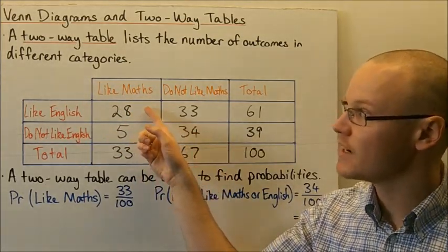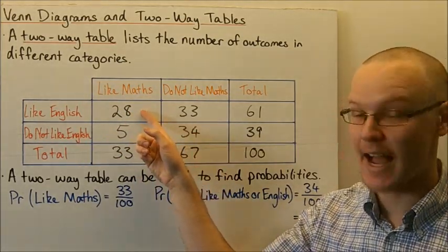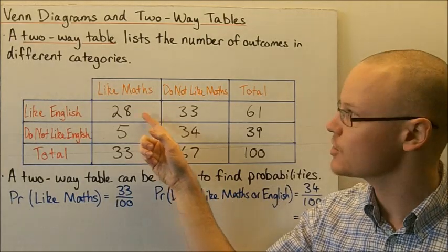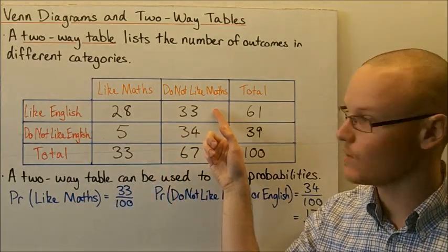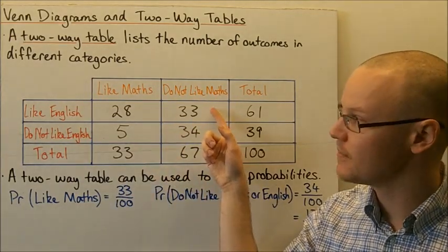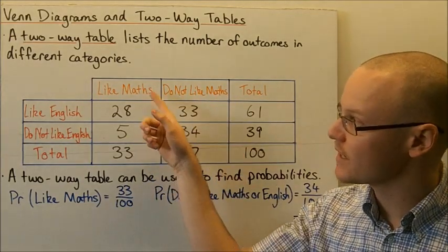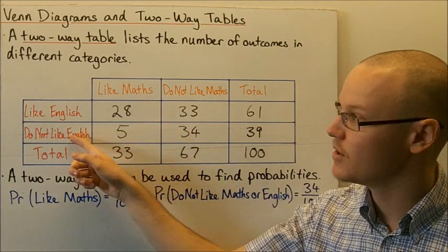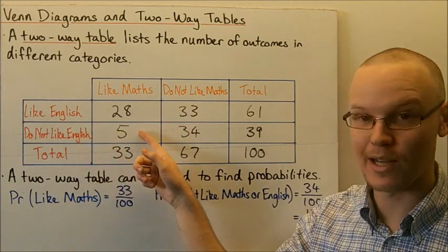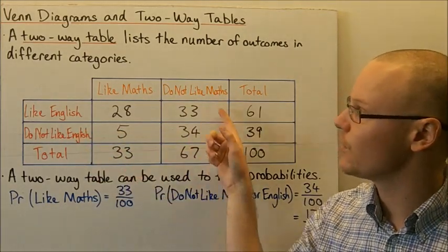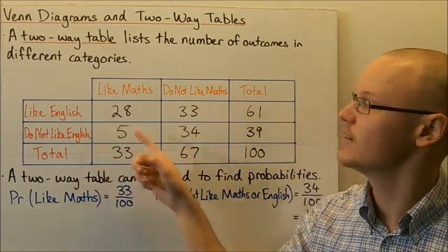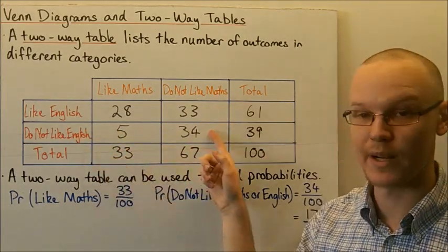The four categories are: Liking Maths and Liking English; Liking English but Not Liking Maths; Liking Maths but Not Liking English; and Not Liking either Maths or English.